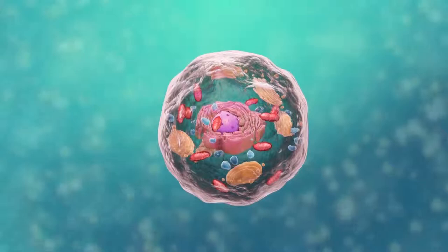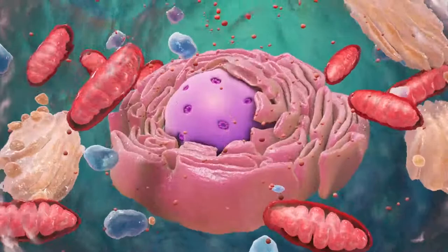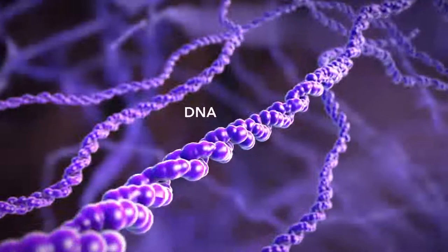Let's start with the nucleus, the control center of the cell. The nucleus contains DNA or genetic material. DNA dictates what the cell is going to do and how it's going to do it.